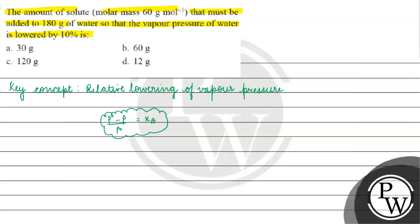Now let's see what is given in the question. We need to find the amount of solute to add to 180 gram of water. The vapor pressure is lowered by 10%, so P0 minus P by P0 into 100 equals 10. Therefore, P0 minus P by P0 is equal to 10 by 100, which equals the mole fraction of the solute.